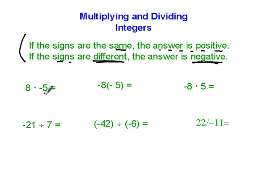Alright, so here we have 8 times -5. Just ignore the signs. 8 times 5 is 40. Now this has a negative sign, that has no sign which means it's positive, so since the signs are different, the answer is negative 40.